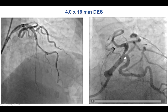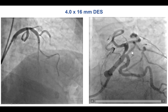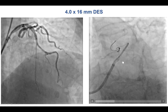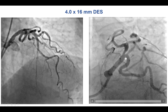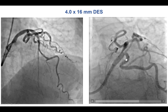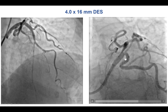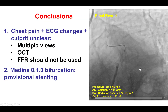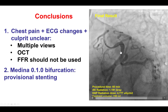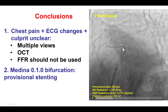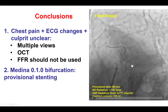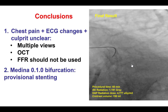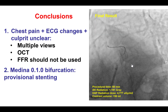This is a Medina 010 bifurcation lesion. Therefore, we decided to do provisional stenting. We thought the chance of having compromise of the circumflex ostium was very small, so we did not place a safety wire into the circumflex. The stent was deployed and a nice result was achieved with TIMI flow in the LAD and the circumflex. The patient had an uneventful recovery and did not have any recurrent episodes of chest discomfort.